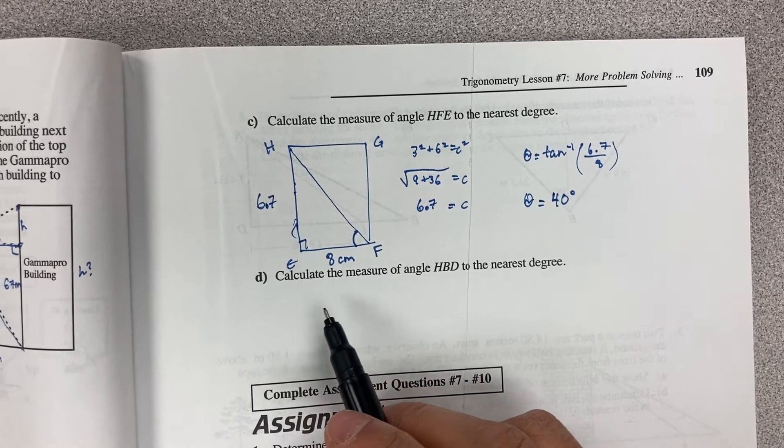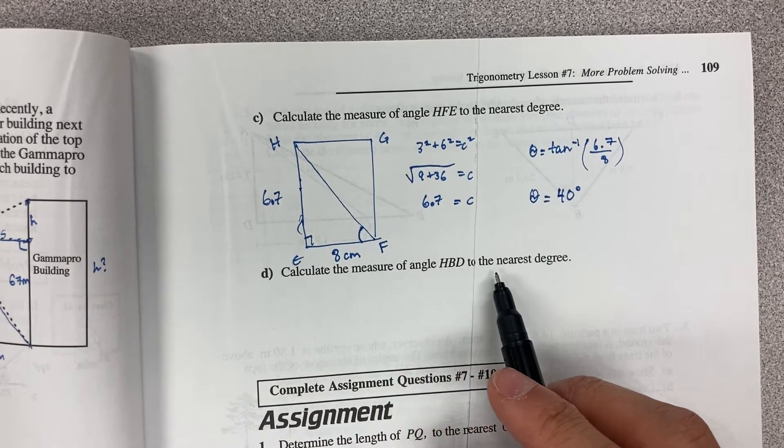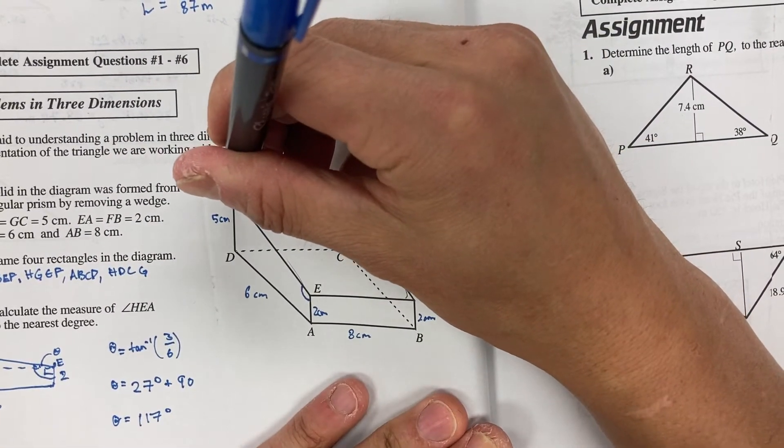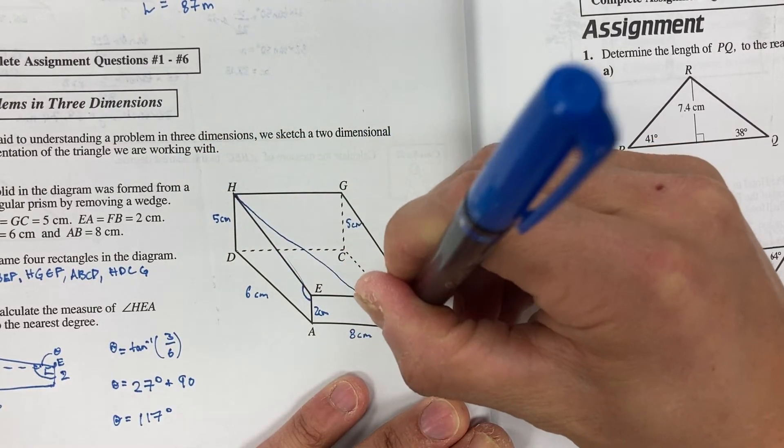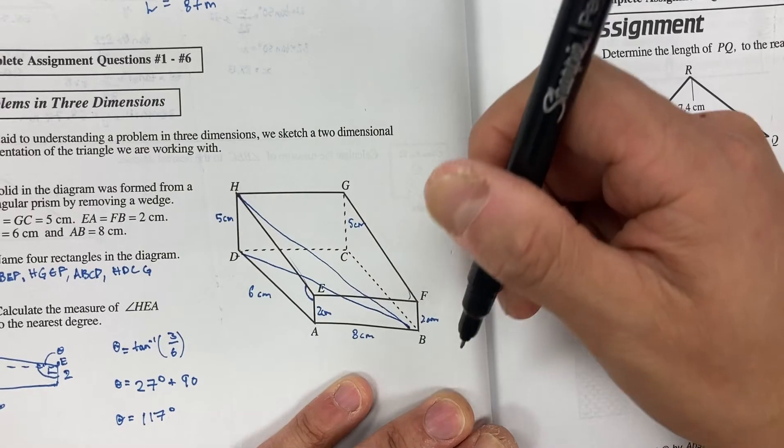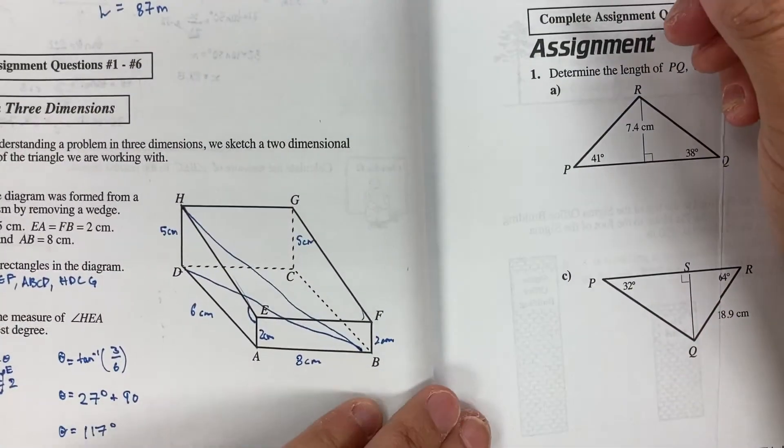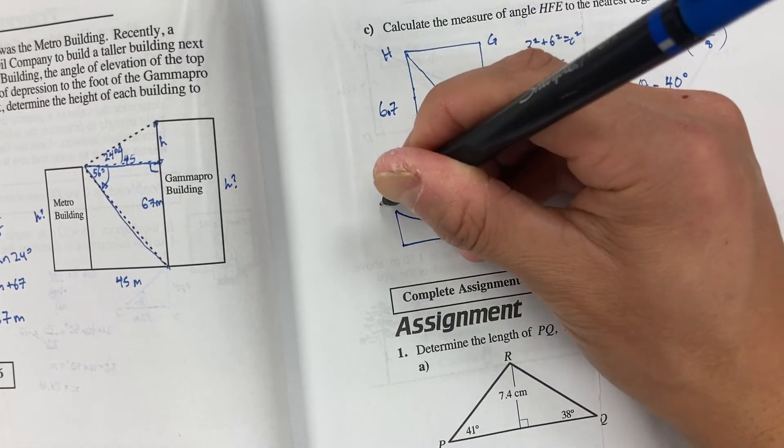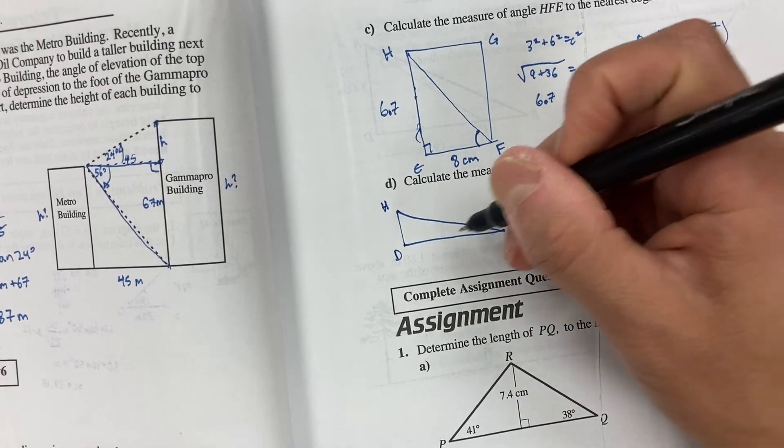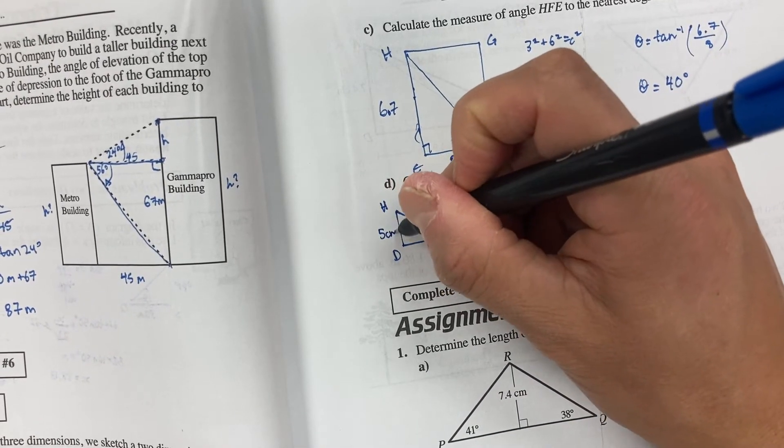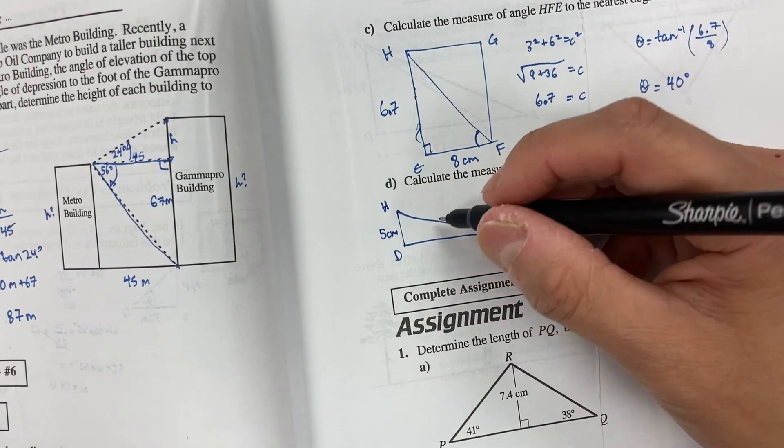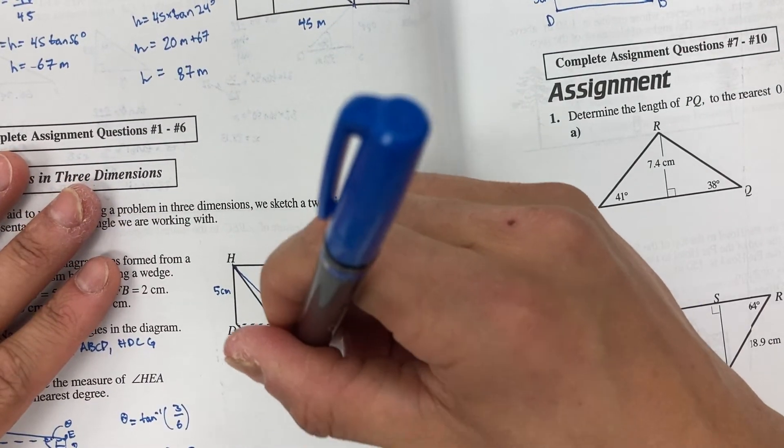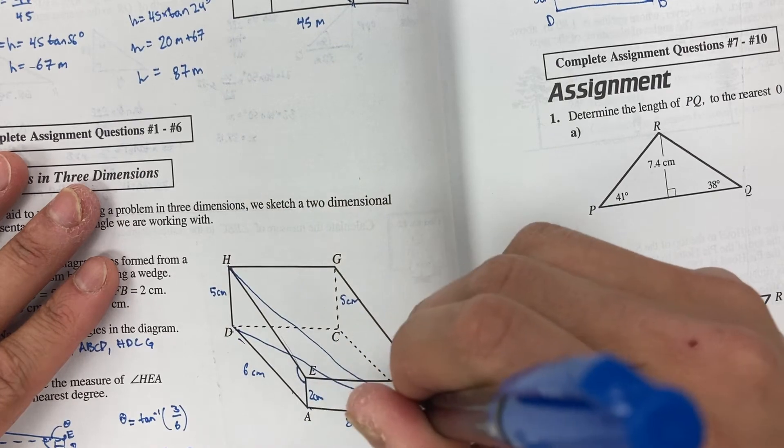And lastly what we want to do is determine the measure of angle HBD to the nearest degree. So HBD that is from H to B all the way to D. And this is also a pretty tricky one. First thing we're going to have to do is redraw that part of the triangle and label what we actually have. So this is H this is D and this is B and what we know is that this is five centimeters. And in order to find out this side length what we got to do is use another smaller triangle. And so we got to use this triangle here which is six eight and we got to find out this side length here.